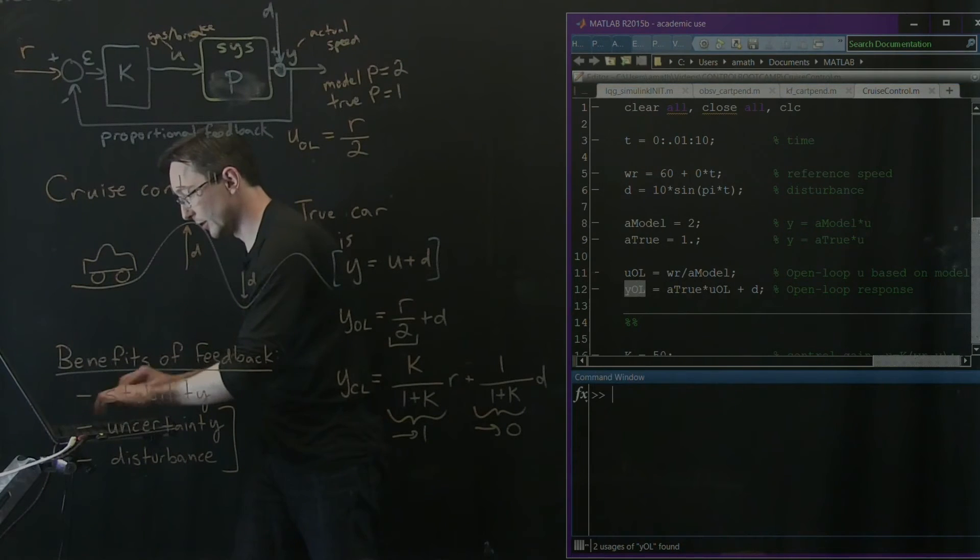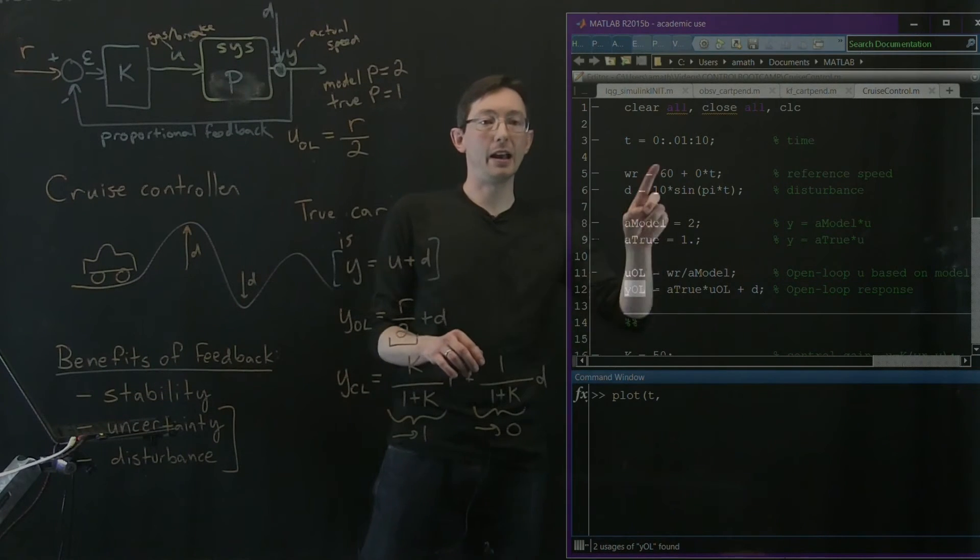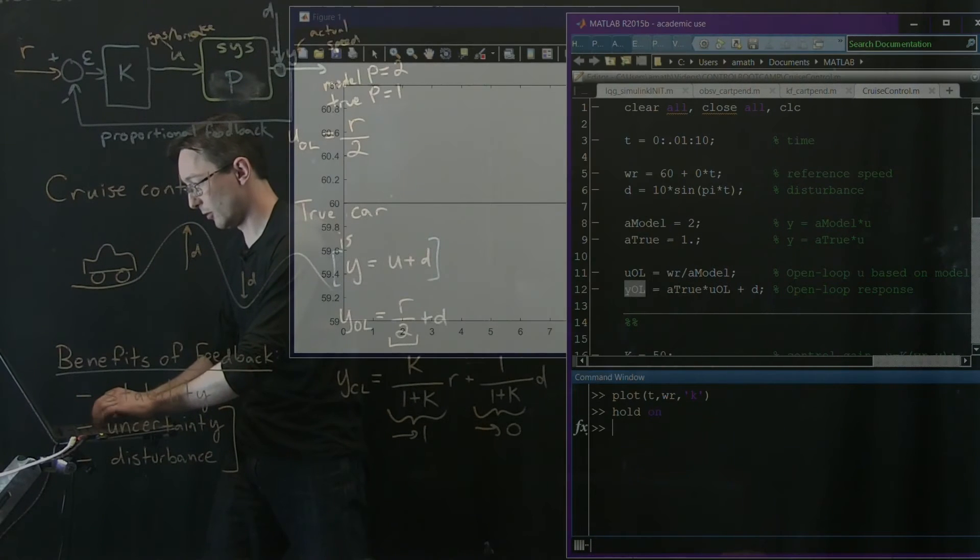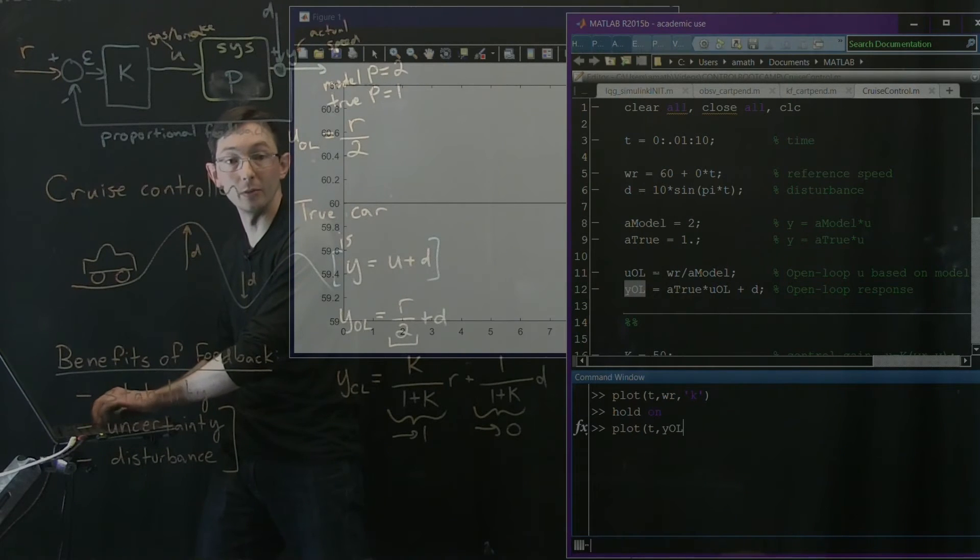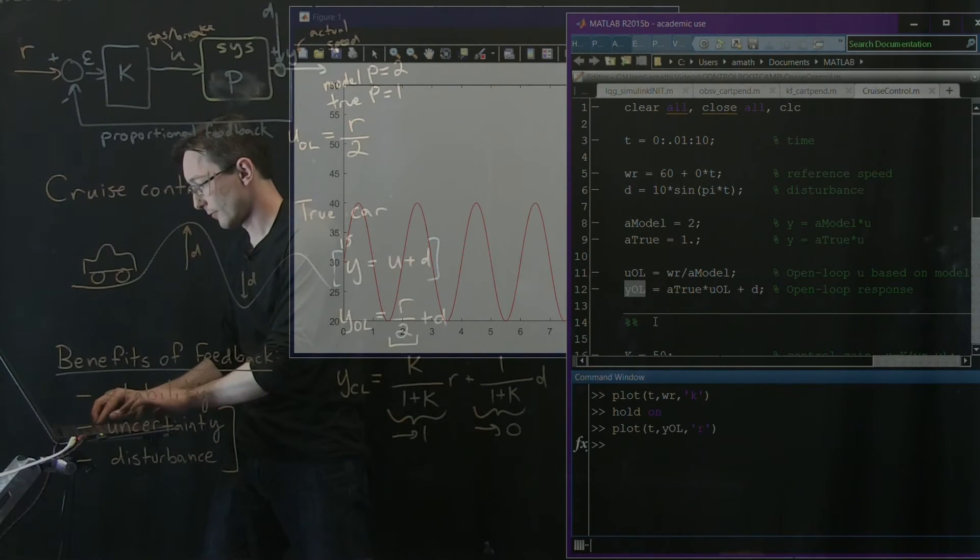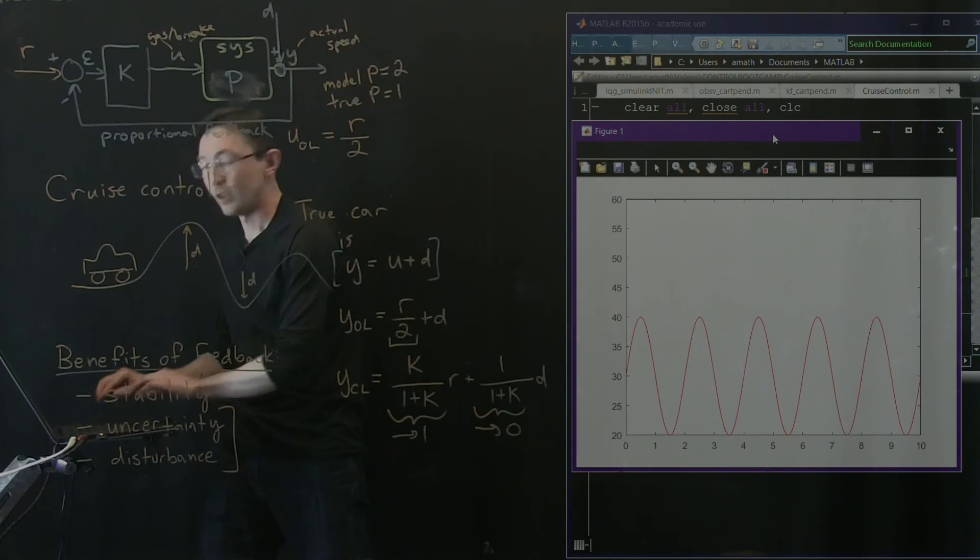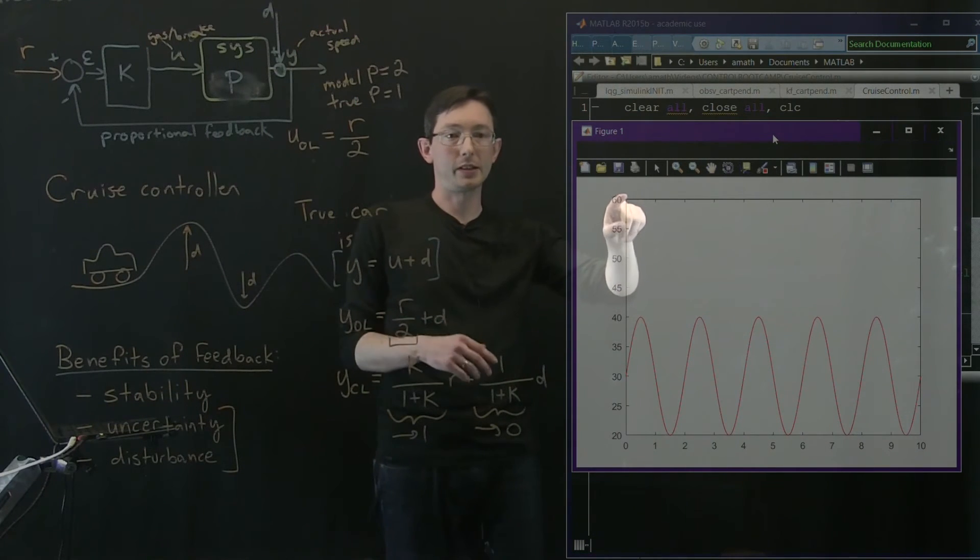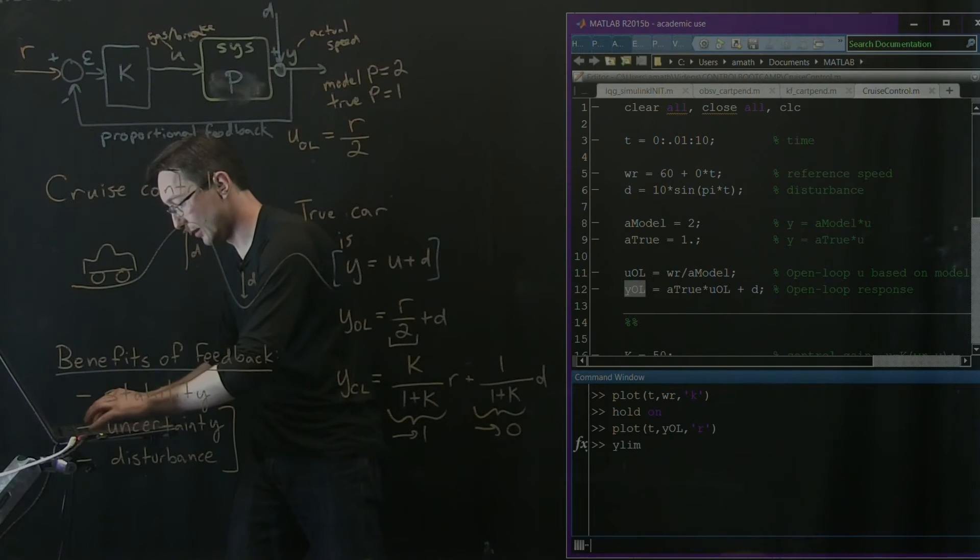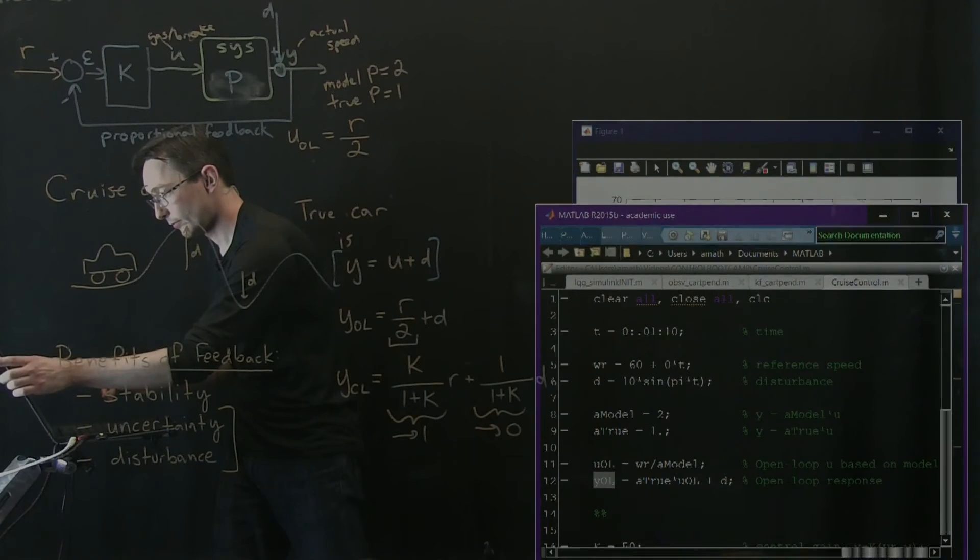So I'm running the top part and now what I'm going to do is plot T by Y open loop. And actually let's plot T by my reference first. So T by my reference, maybe in black. And then I'll hold on and I'll plot T by my actual Y open loop, let's say in red. So you can see here my, well, it's actually a little hard to see, but my desired reference is right up here at the top. It's a black line at the top. If I wanted to, I could say Y lim 0 to 70, so we can see this a little bit better.